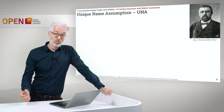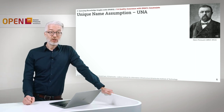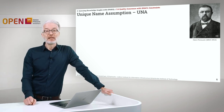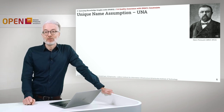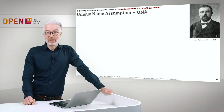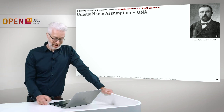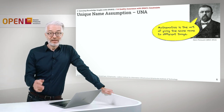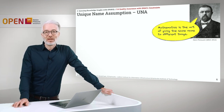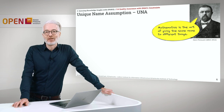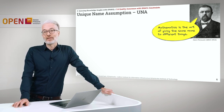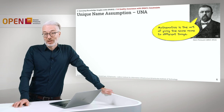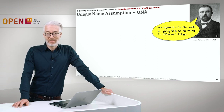Besides the open world assumption, we also have to talk about the unique name assumption. And there I want to introduce an interesting French guy, Henri Poincaré, a famous mathematician. He is also famous for the quote: mathematics is the art of giving the same name to different things. And this, of course, contradicts our unique name assumption.